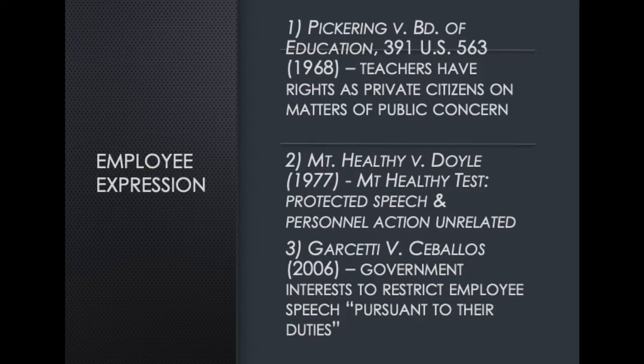In summary, these three cases provide key general principles applicable to employee speech rights in K-12 schools. The Pickering case established that teachers have rights as private citizens to comment on matters of public concern. The Mount Healthy test requires the employee to prove their speech was protected, and the school district to prove the personnel action was unrelated to that protected speech. The Garcetti case shows that the government's interest in restricting employee speech pursuant to their duties must be compelling and clear.